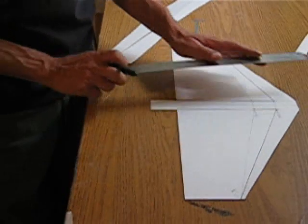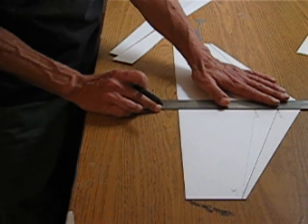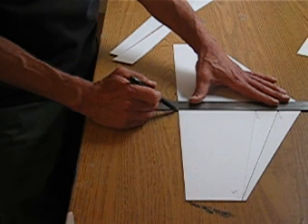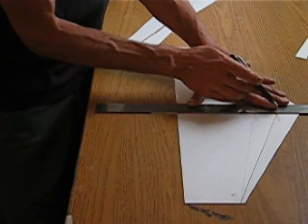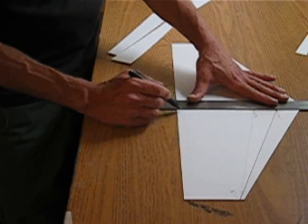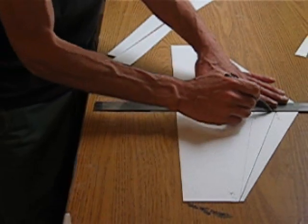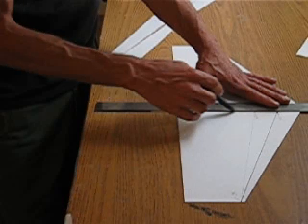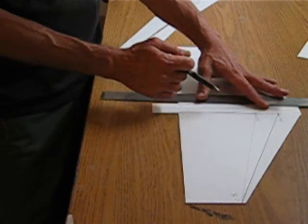Once you've got your center line, connect the corner back here at the elevon and at the relief cut with a pen, and roll over it several times, getting deeper and deeper so that this will be a crease line. Do that on both sides.